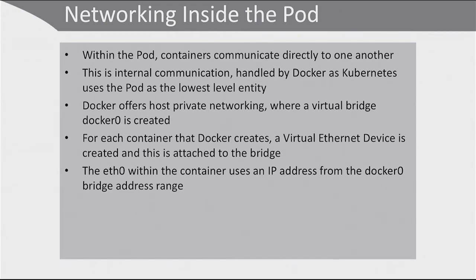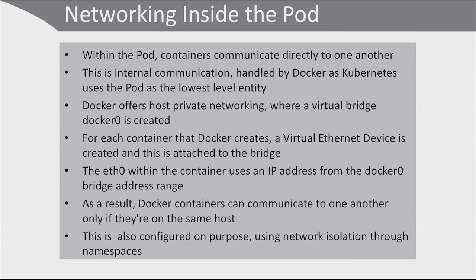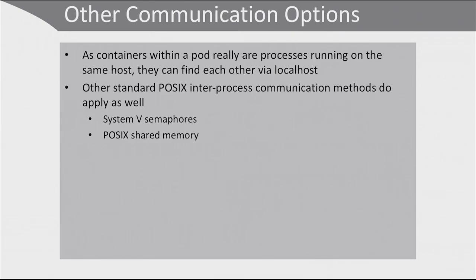The eth0 interface within the container uses an IP address from the Docker0 bridge address range. As a result, Docker containers can communicate to one another only if they are on the same host — which they have to be, since containers in a pod cannot be spread over multiple hosts. This network communication within the pod is completely independent of Kubernetes networking, and is configured using network isolation through namespaces. Containers within a pod can also find each other via localhost, and standard POSIX interprocess communication methods work as well, like System V semaphores or POSIX shared memory.